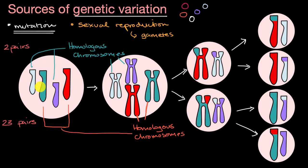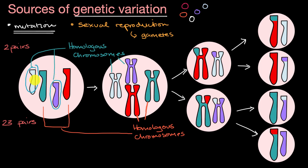The two pairs help us understand what's going on and where some of this genetic variation is going to come from. I've already pre-labeled the homologous chromosomes here. As a reminder, homologous chromosomes are ones that have the same genes on them — they could have different versions of the genes, but they're fundamentally coding for the same genes.